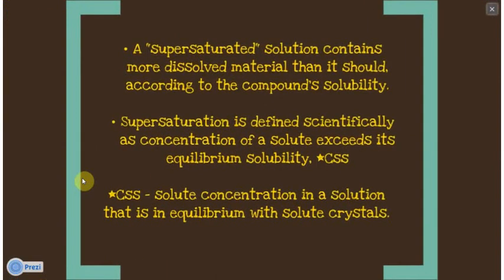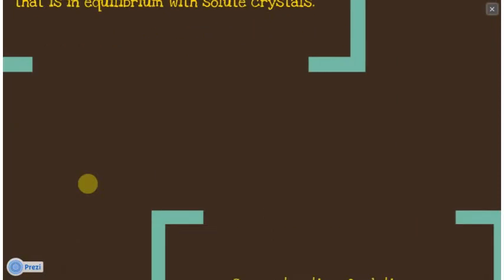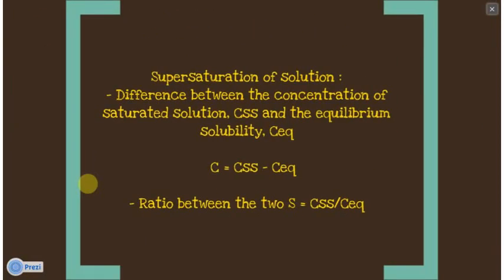A supersaturated solution contains more dissolved material than it should according to the compound's solubility. Supersaturation is defined scientifically as when the concentration of the solute exceeds its equilibrium solubility. Supersaturation of a solution can be expressed in two ways: the first is the difference between the concentration of the saturated solution and the equilibrium solubility, while the second is the ratio between the two.